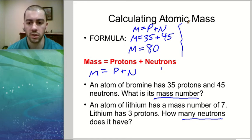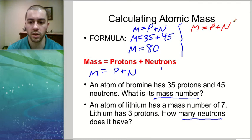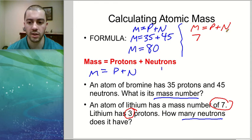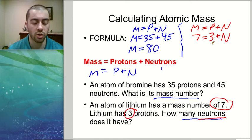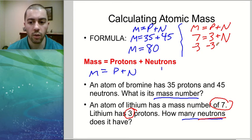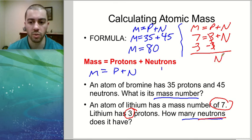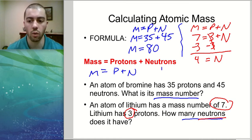For the second question, we use the same formula: mass equals protons plus neutrons. This time we're given a mass of 7, which we plug into the mass spot, and 3 protons, which we plug into the proton spot. We're solving for neutrons. To isolate neutrons, we subtract 3 from both sides. The 3s cancel on the right, leaving just the neutron number, and 7 minus 3 gives us 4. So this lithium atom has 4 neutrons.